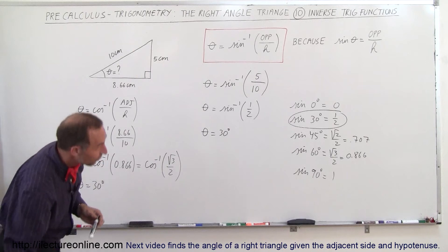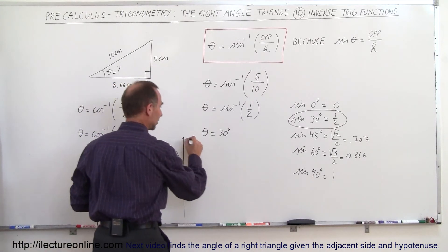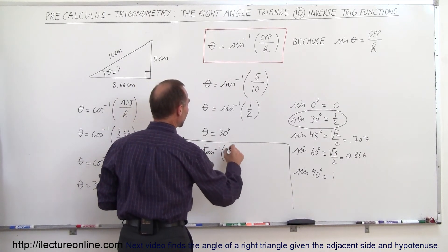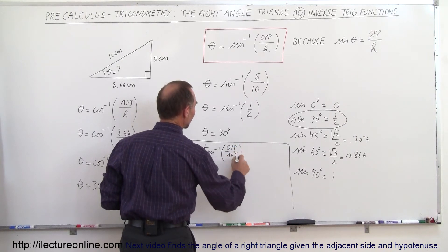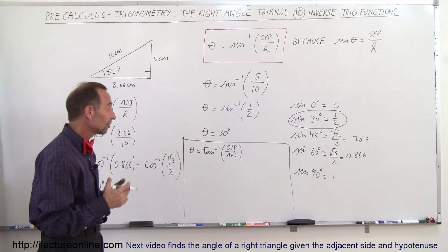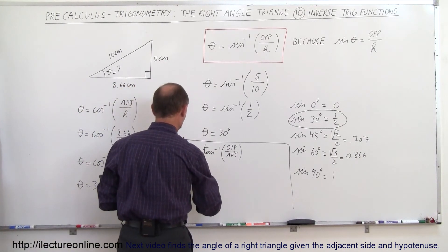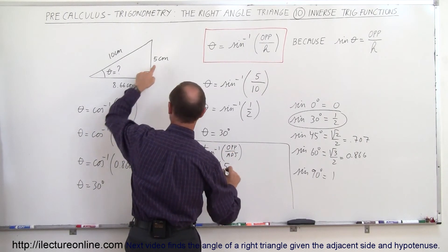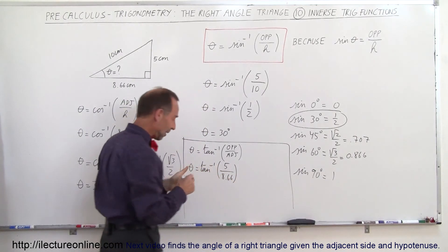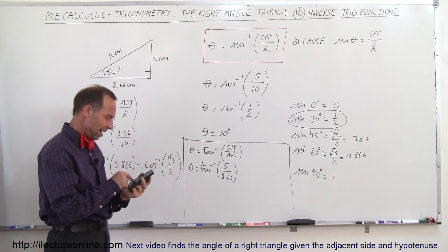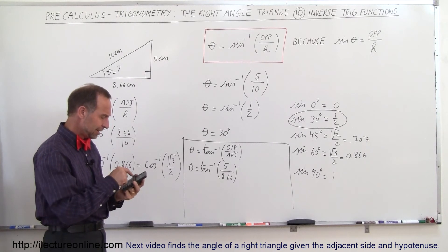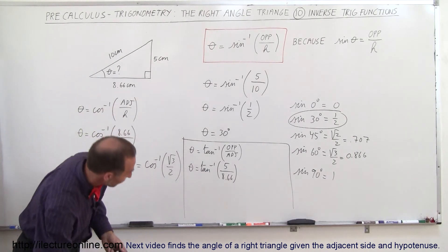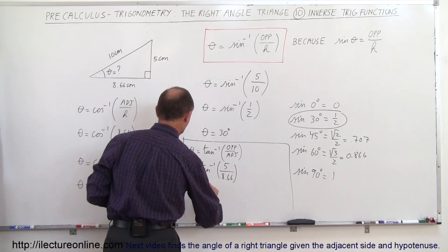We could also use the tangent of theta. We can say that theta is equal to the arc tangent of the opposite side divided by the adjacent side. So theta is equal to the arc tangent of 5 divided by 8.66. You grab your calculator, go 5 divided by 8.66, take the second function tangent — the inverse tangent — and there it is: 30 degrees. So theta equals 30 degrees.